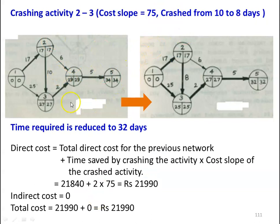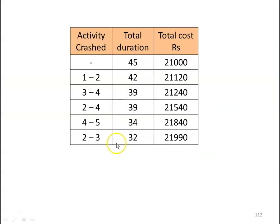Further crashing is not possible as all activities in the critical path have been crashed. The consolidated results table: normal duration 45 days, cost 21,000; crash 1-2 → 42 days, 21,120; crash 3-4 → 39 days, 21,240; crash 2-4 → 39 days, 21,540; crash 4-5 → 34 days, 21,840; crash 2-3 → 32 days, 21,990. The answer: total project duration is 32 days and the total minimum cost is 21,990.